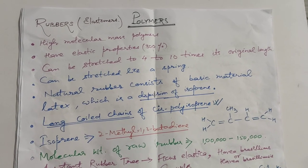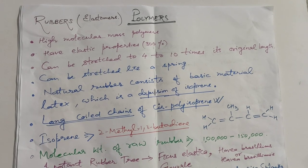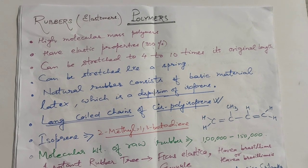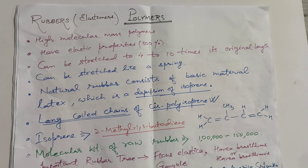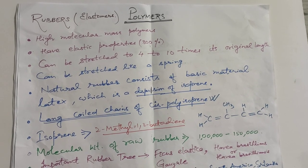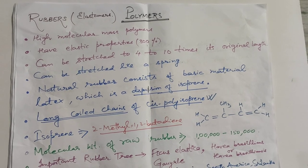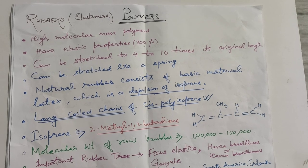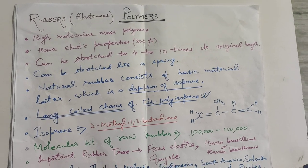Natural rubber consists of the basic material latex. Latex is actually a dispersion of isoprene. Isoprene is actually 2-methyl-1,3-butadiene. Rubber is a long coiled chain of cis-polyisoprene, so natural rubber is a cis polymer of isoprene.